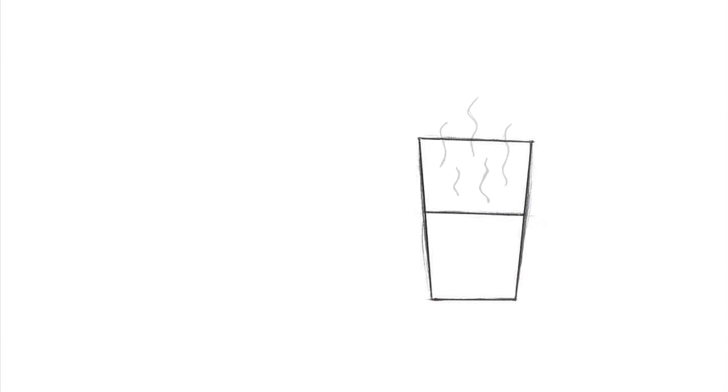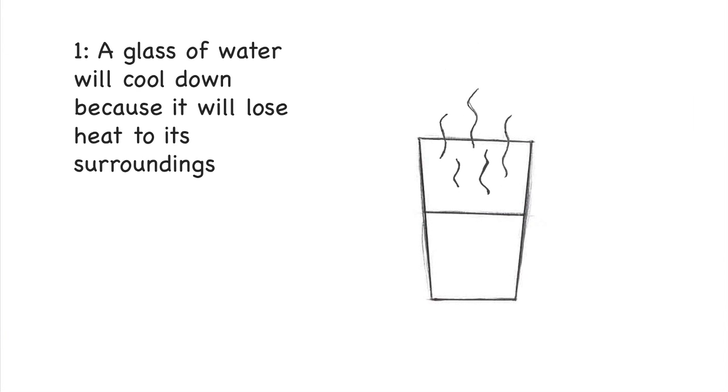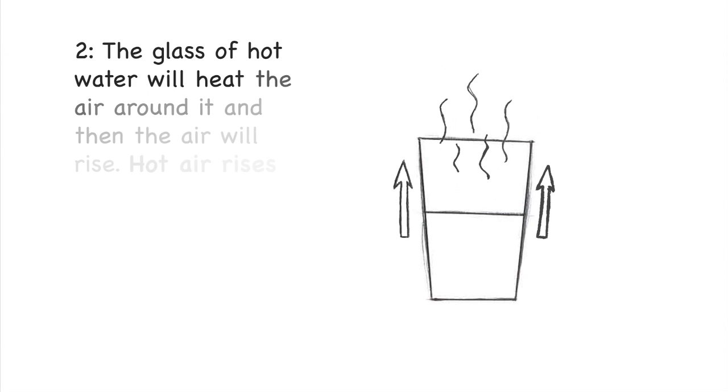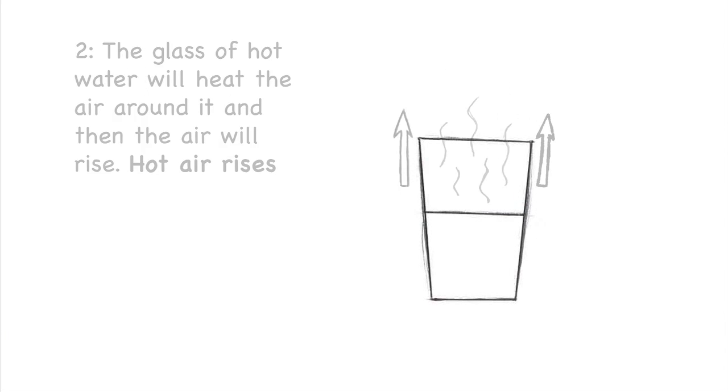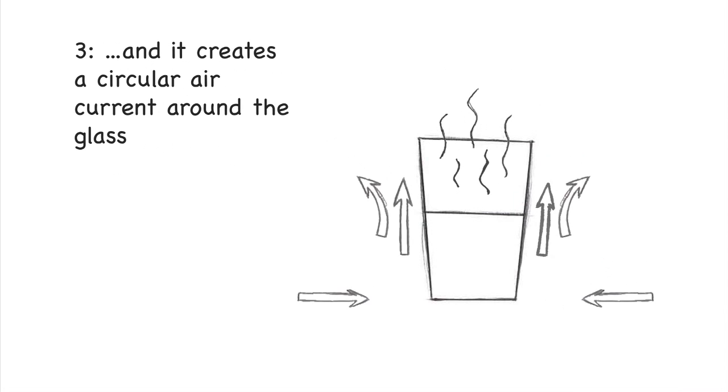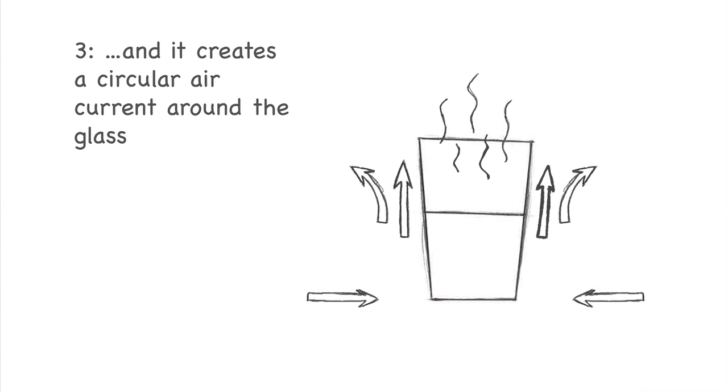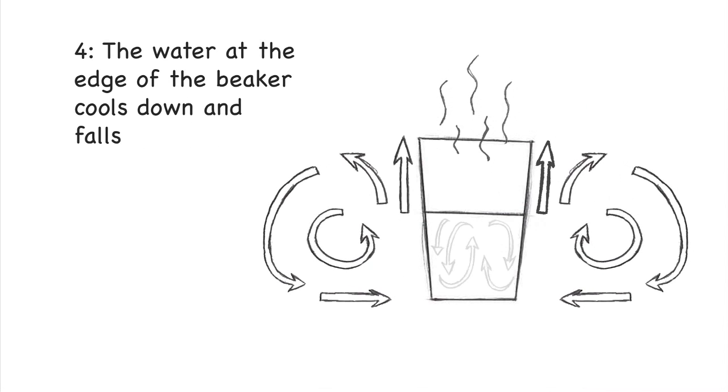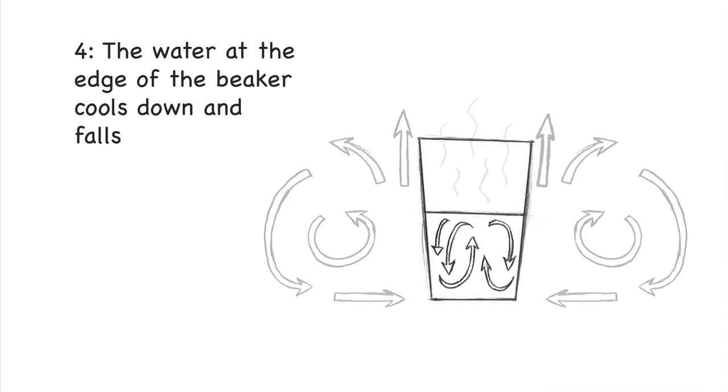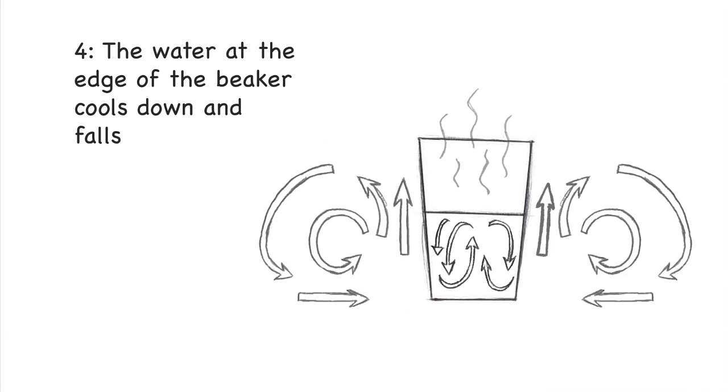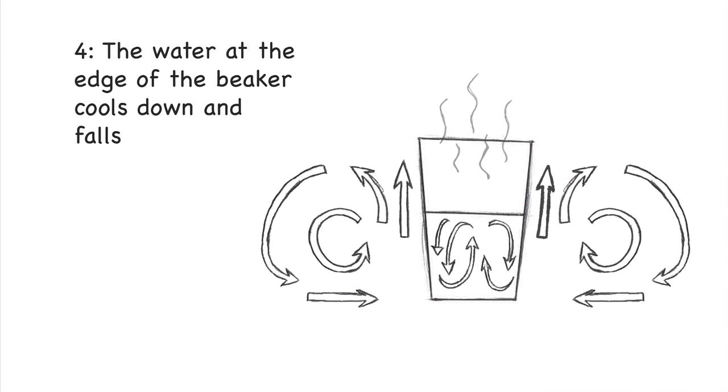A glass of hot water will cool down because it loses heat to the surroundings. The hot water will heat the air around it and then the air will rise because hot air rises and it creates a circular air current around the glass. The water at the edge of the beaker cools down and falls. The large temperature difference causes faster convection and so hot water cools down faster.